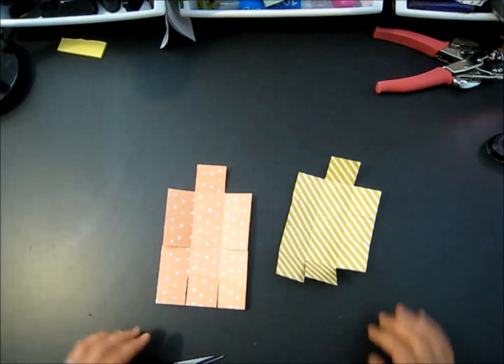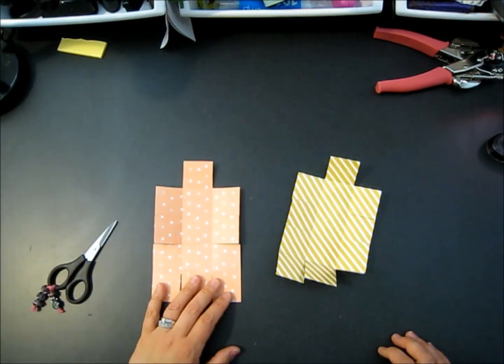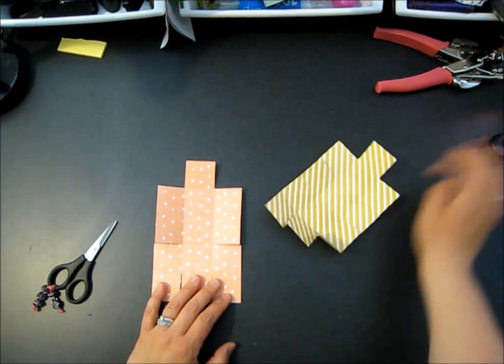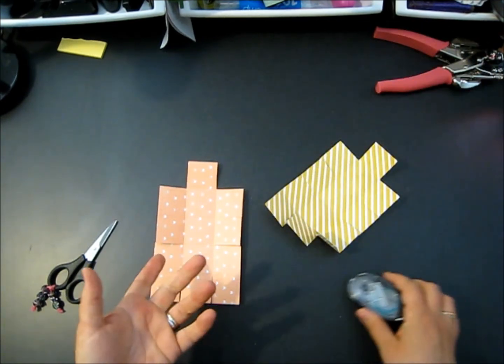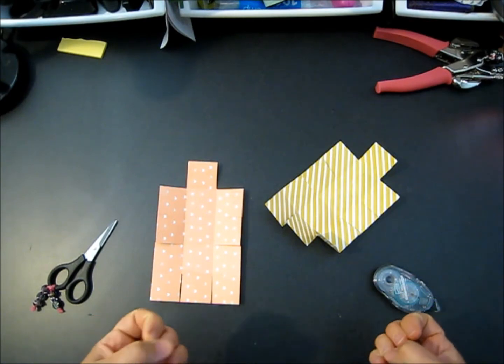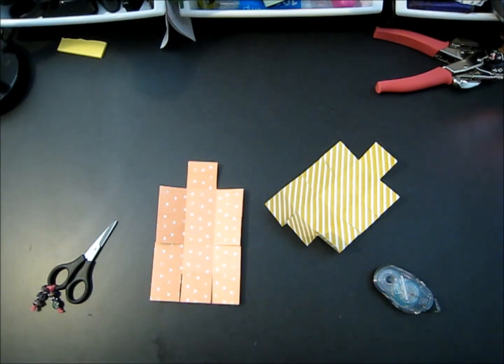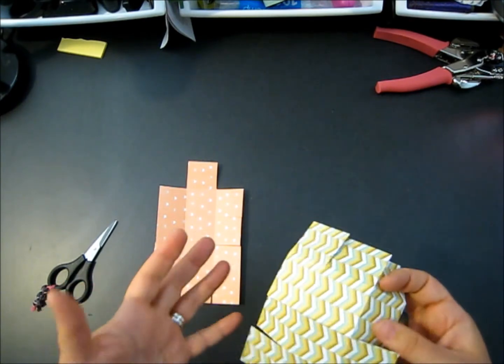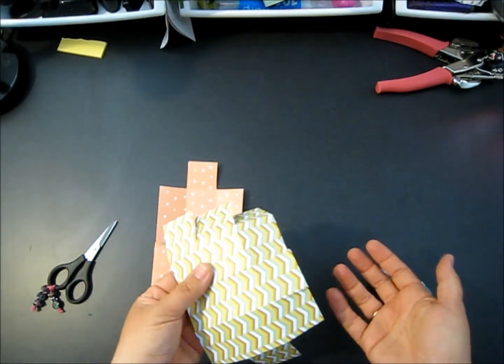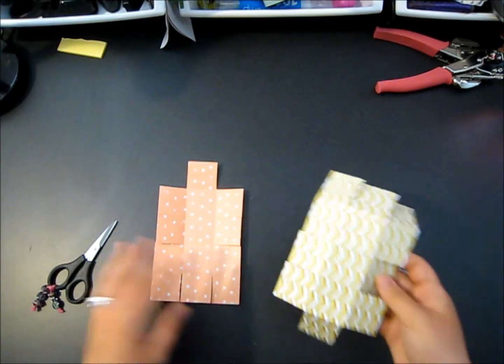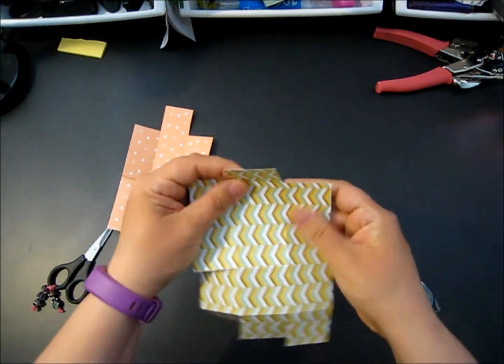That is all my garbage. Now we're going to adhere it. I'm using snail in the video. If you're going to be gifting this, you're probably going to want to use sticky strip or Tombow or Fuse, something that's going to hold more firmly because you don't want it falling apart on someone.